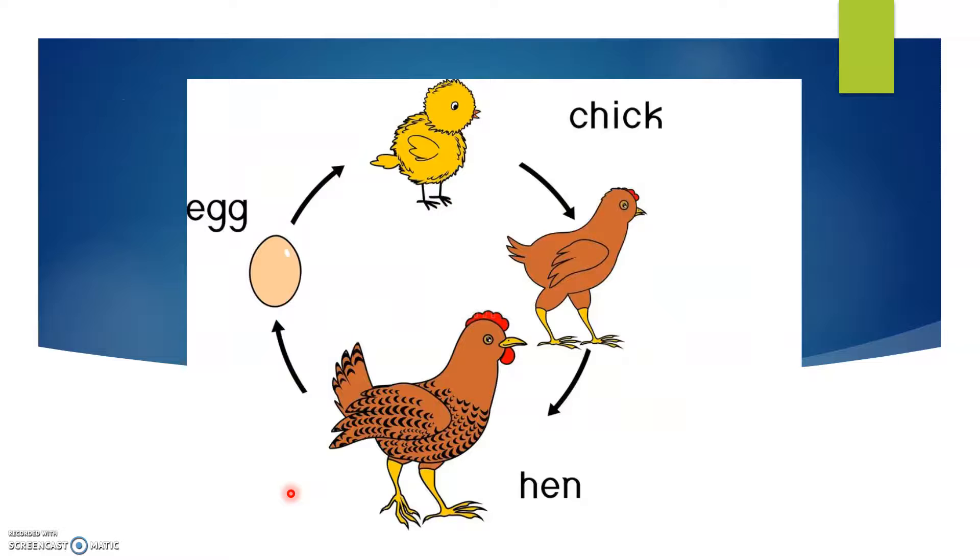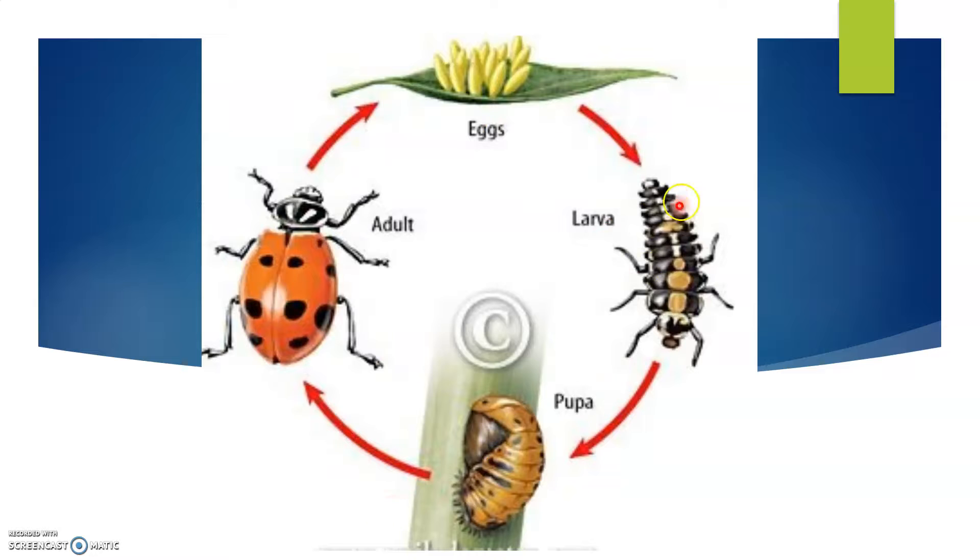Now this is the easy one. Egg, then eggs become chick, and chick becomes hen. These are the life stages of hen or chicken.